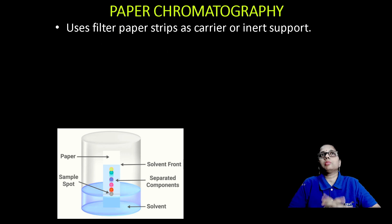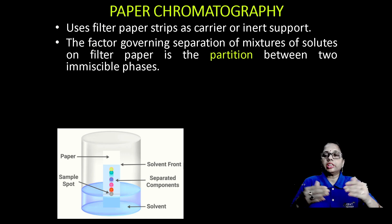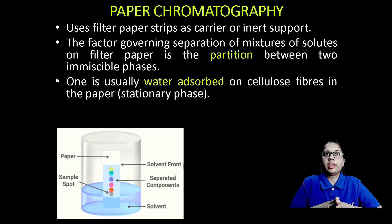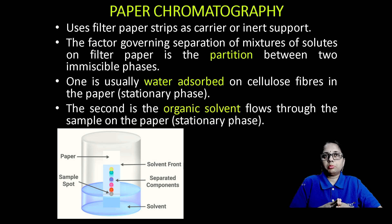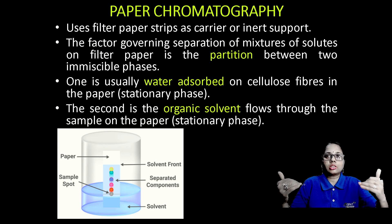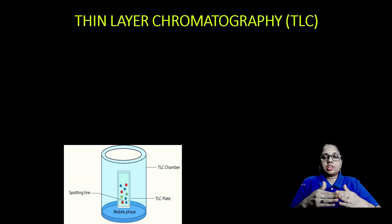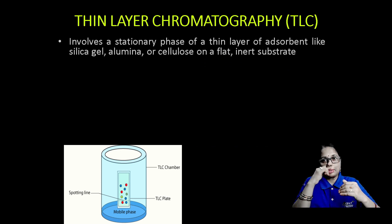Paper chromatography is similar to column chromatography and uses filter paper strips as the carrier or inert support. The factor governing the separation of a mixture of solutes in paper chromatography is mainly partition — that means the water adsorbed on the cellulose fibers forms the stationary phase, and the organic solvent flows through the paper as the mobile phase. That is why the principle involved here is partition.